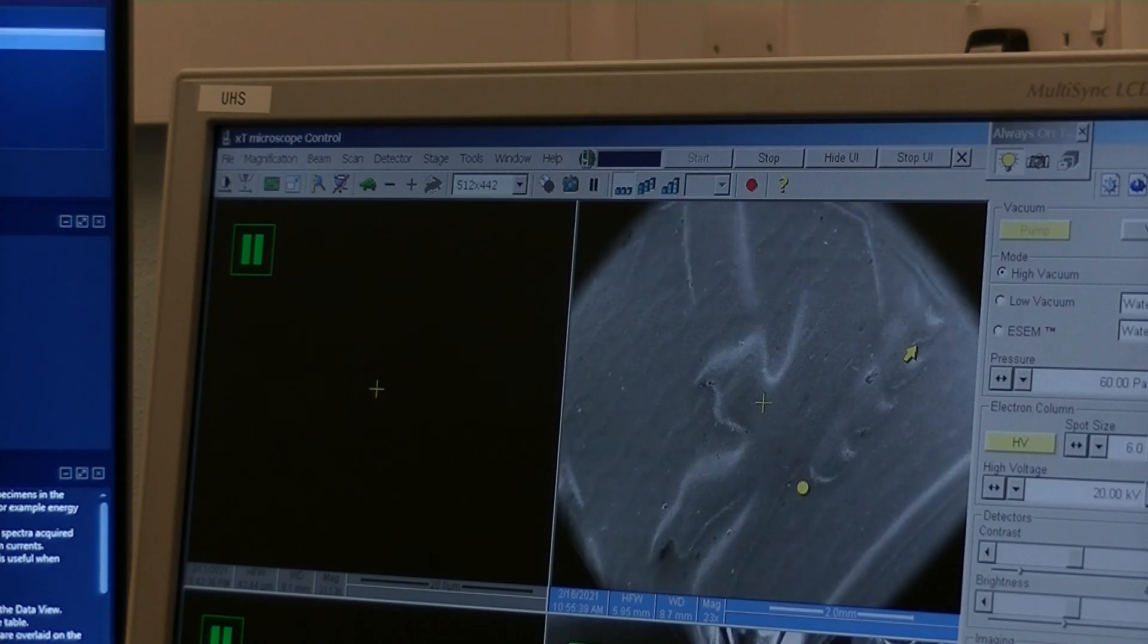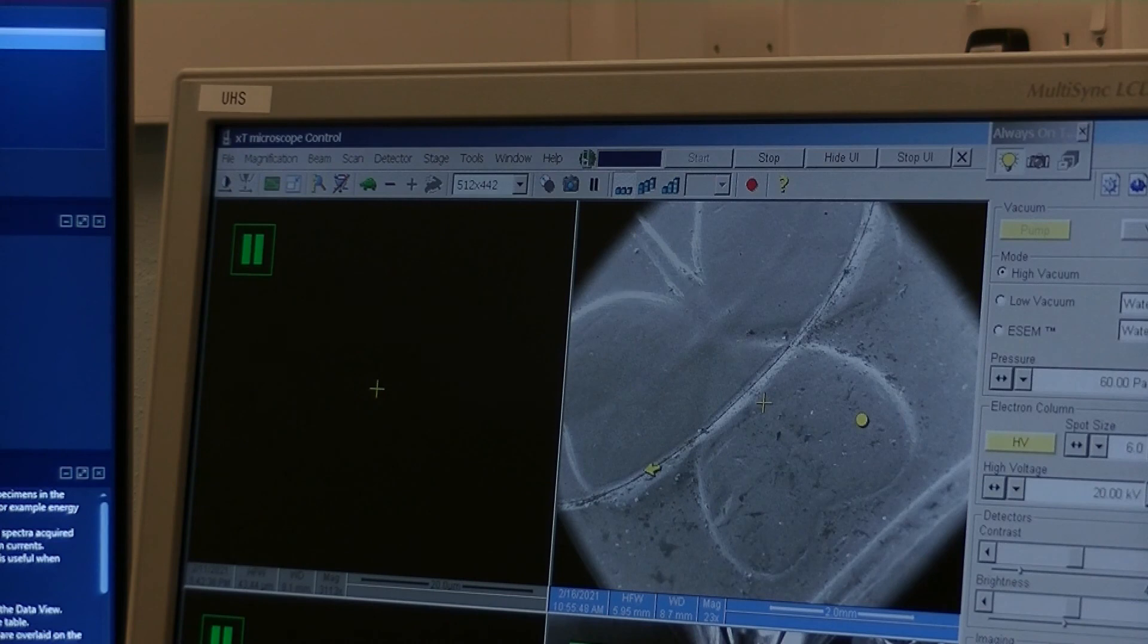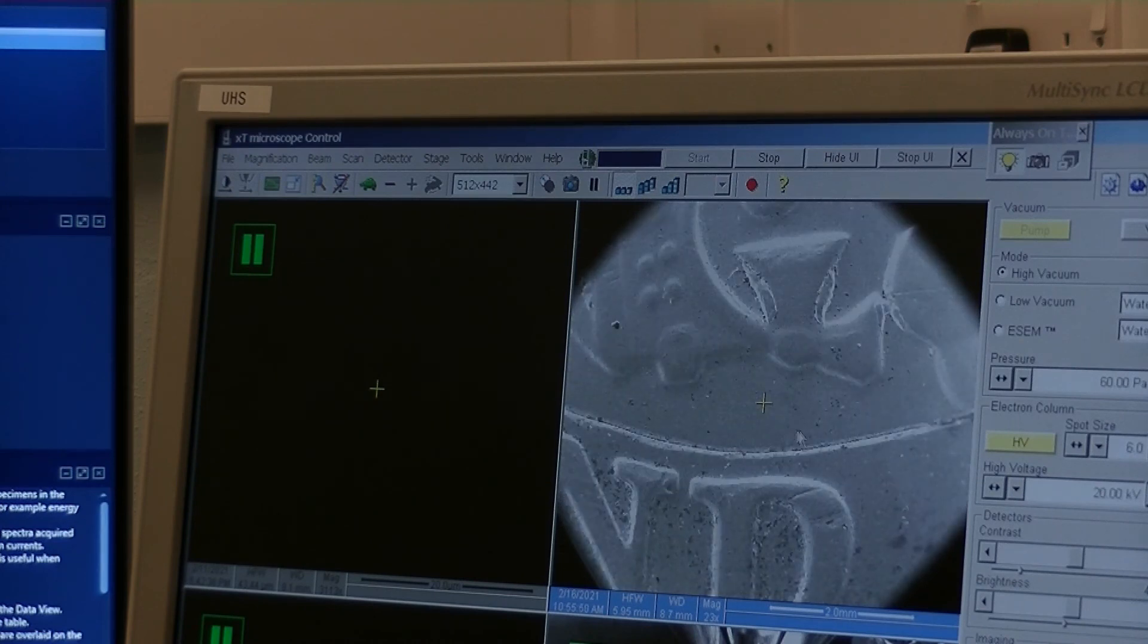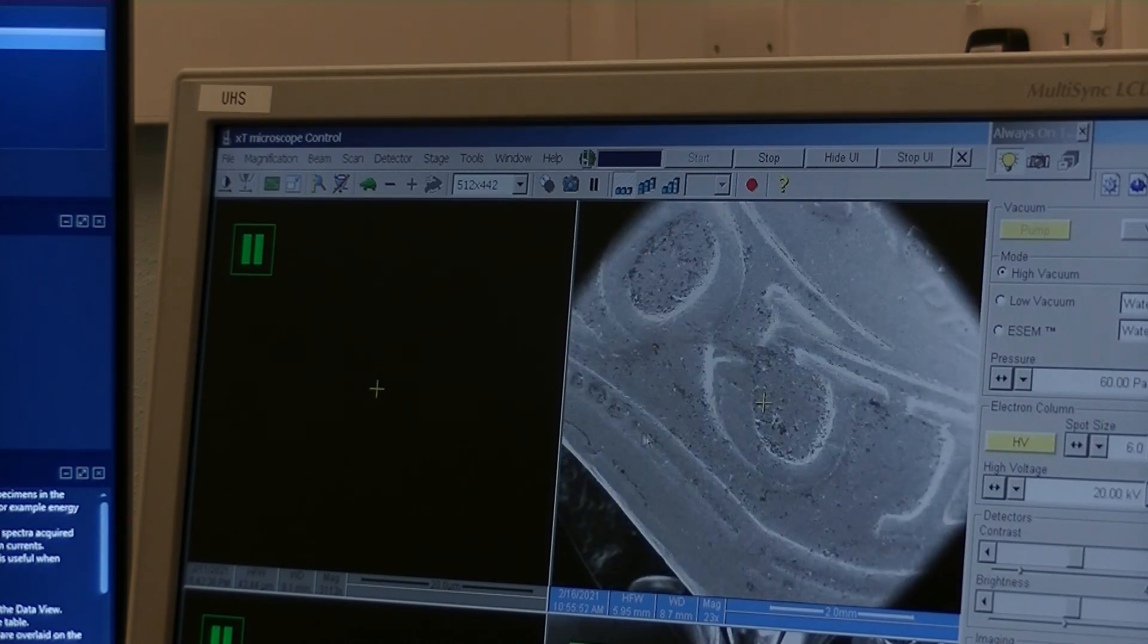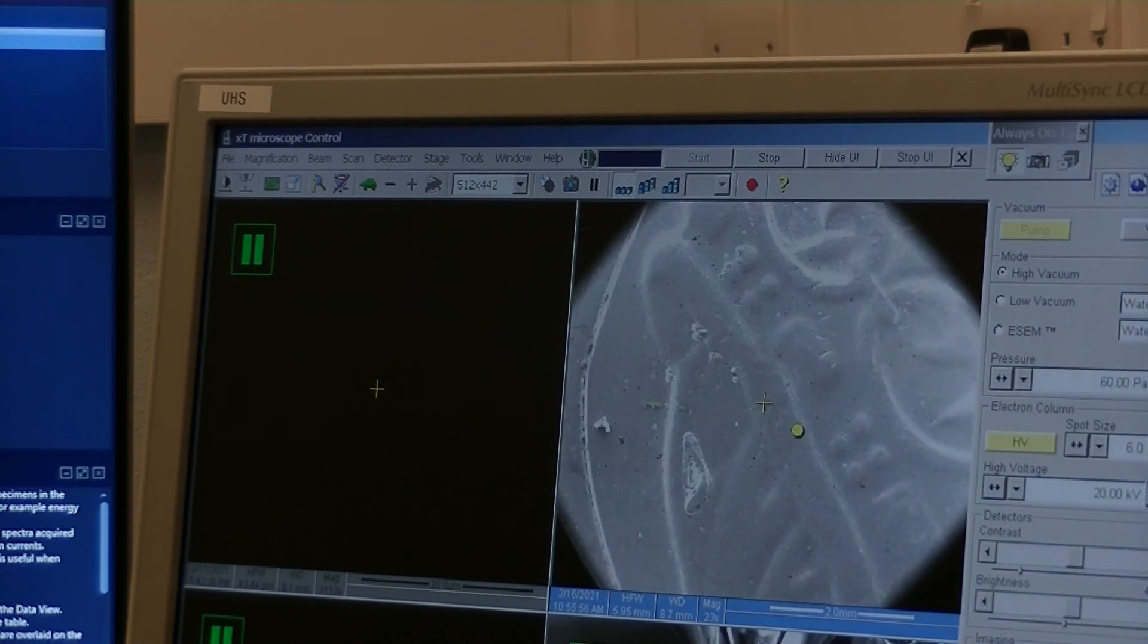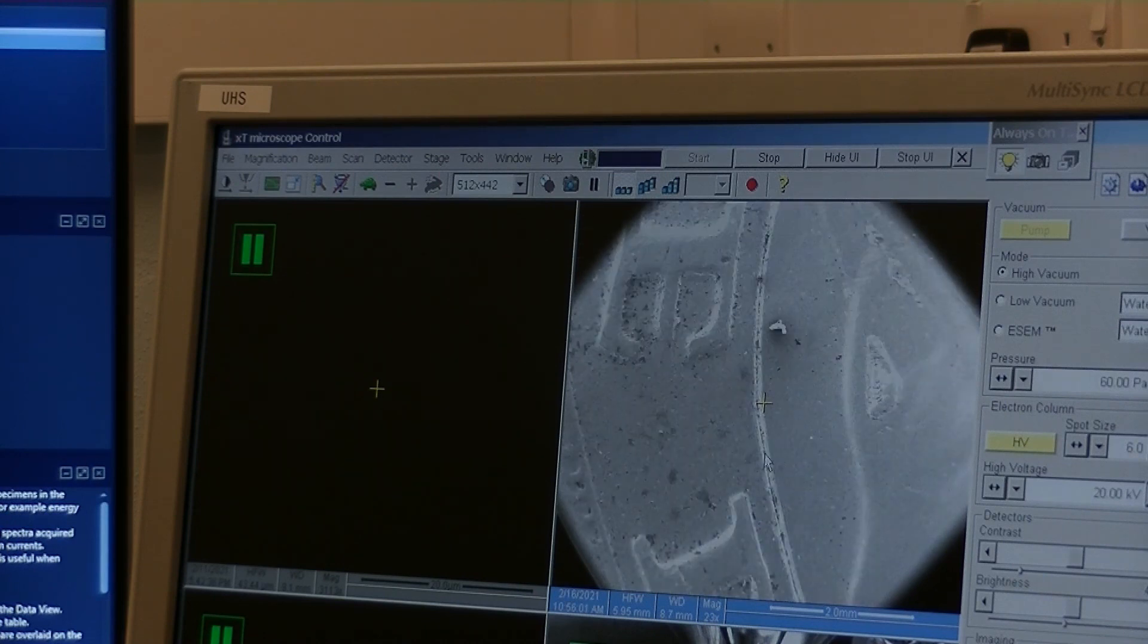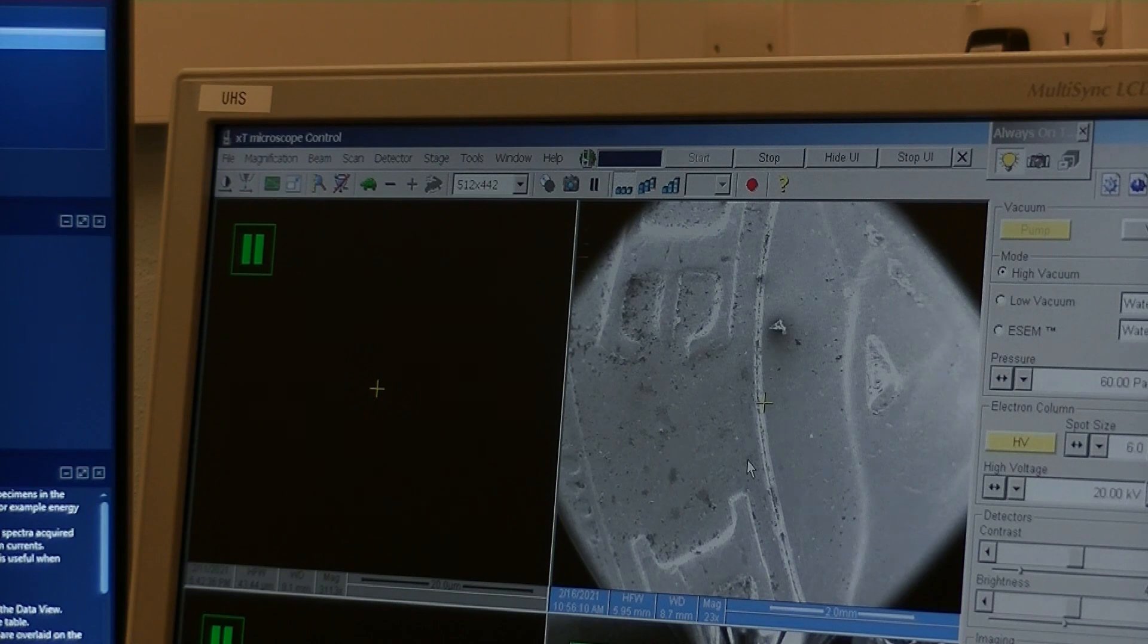Now let's have a look at our 1 pound coin. Alright, here we are. So 1 pound coins have two different colored metals - that inner circle and an outer ring. My pound coin at the moment has the inner circle on the right and the outer ring on the left hand side where those letters are there. So I could do a point and ID again where I click on part of the image that I want to analyze.